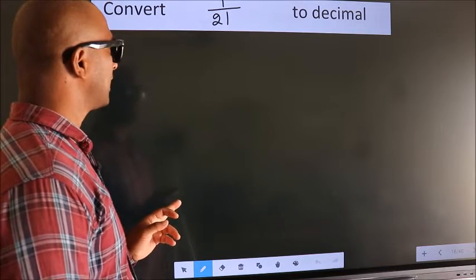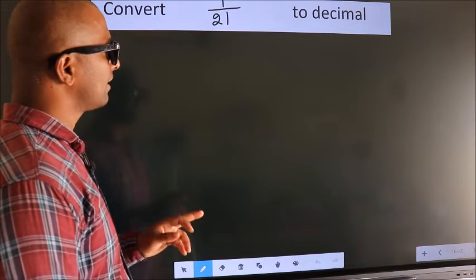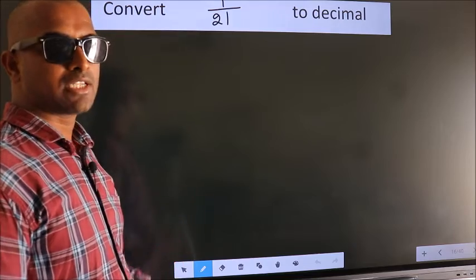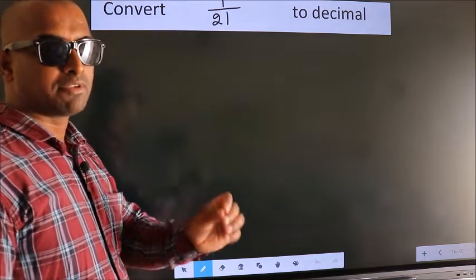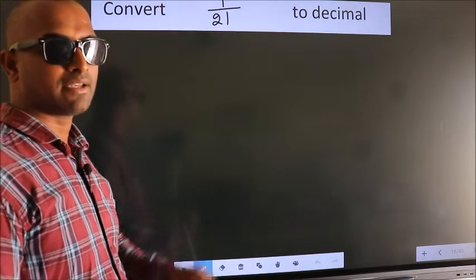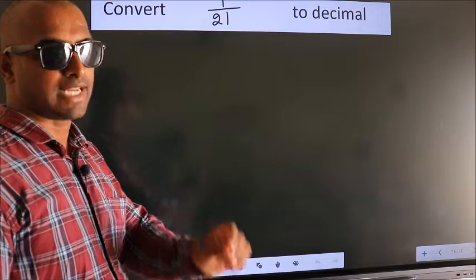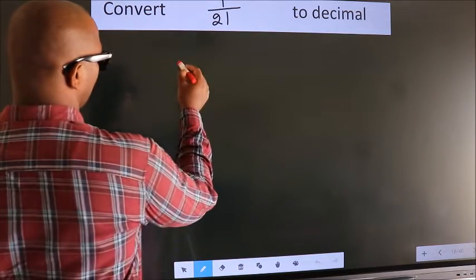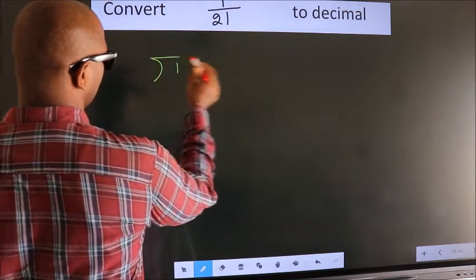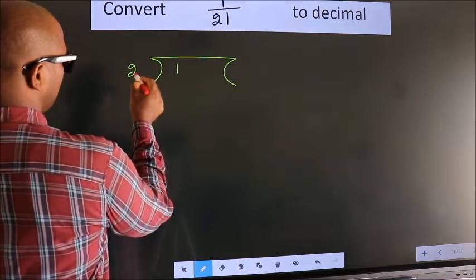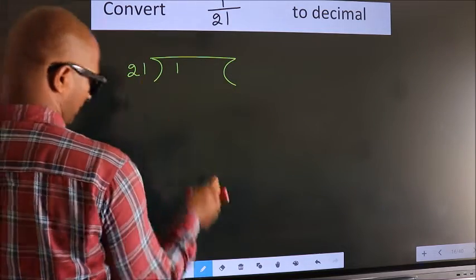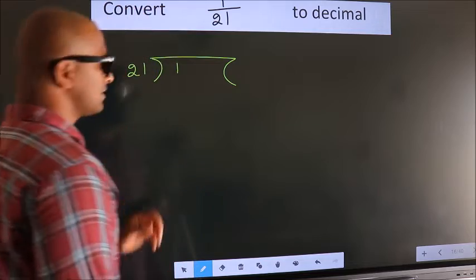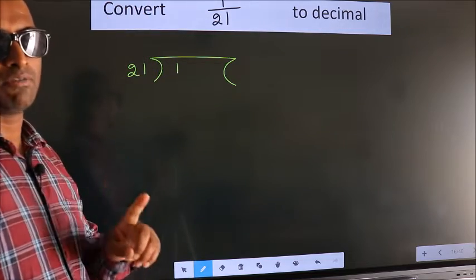Convert 1 by 21 to decimal. To convert this to decimal, we have to divide. And to divide, we should frame it in this way: 1 here, 21 here. This is your step 1.